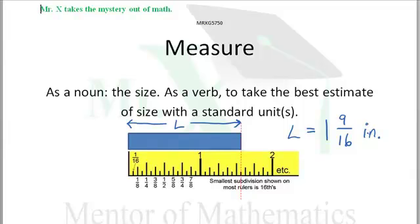What if we were measuring to the nearest millionth of an inch? Would it still be one and nine sixteenths? Of course not. We make the best estimate with standard units.